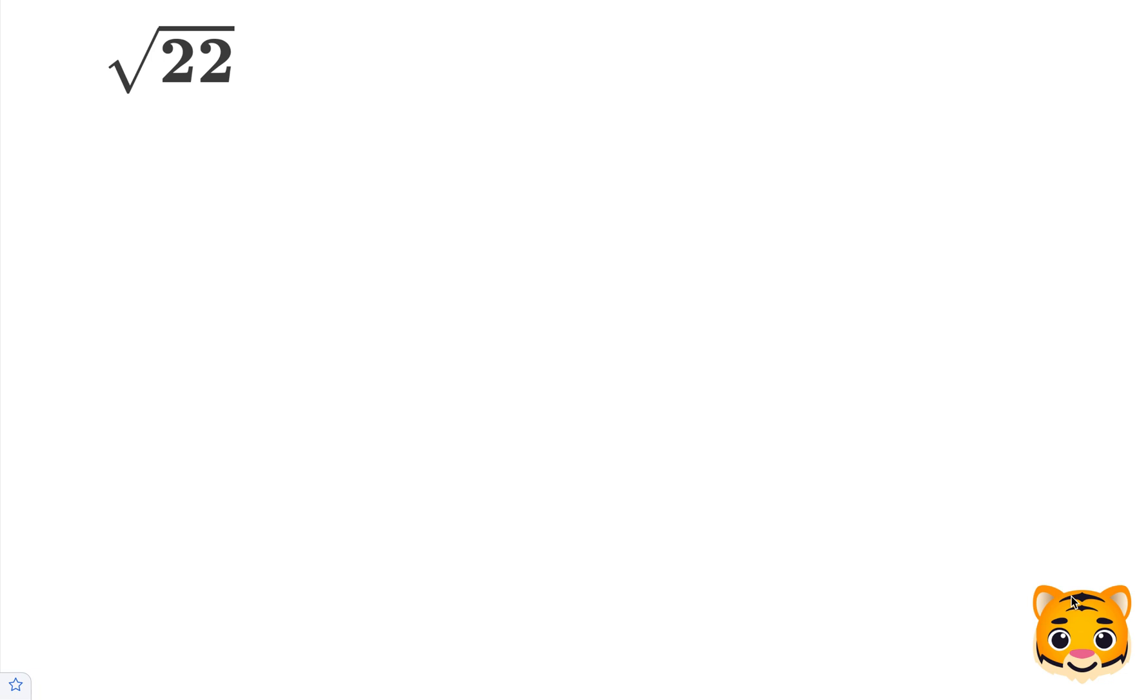In this example, we're going to approximate the square root of 22. To do this, we want to first think about perfect squares nearby to 22. Examples of this include 4 squared, which is 16, and 5 squared, which is 25.